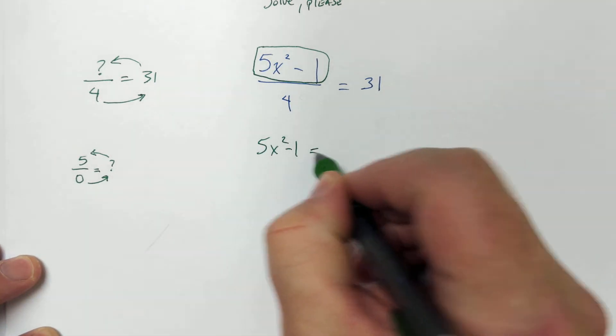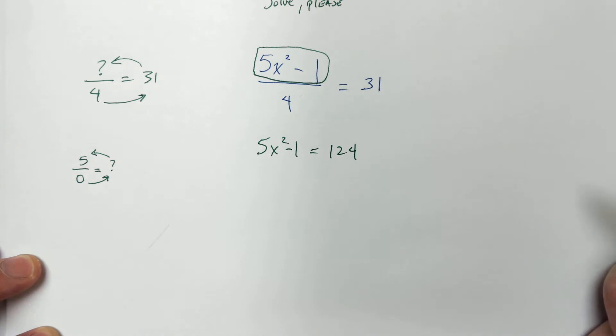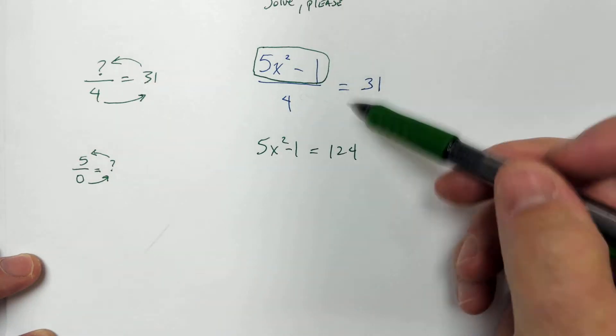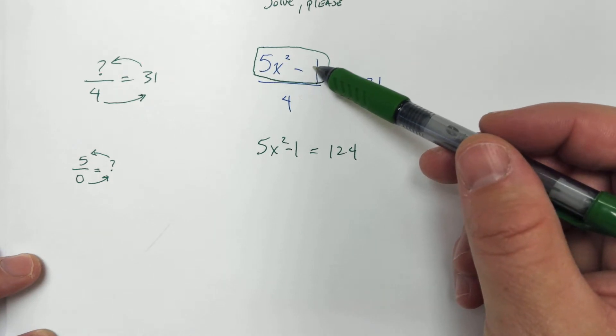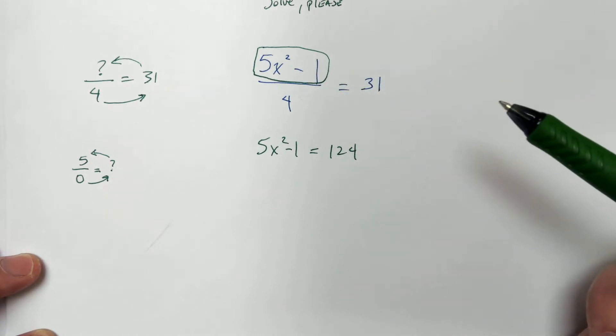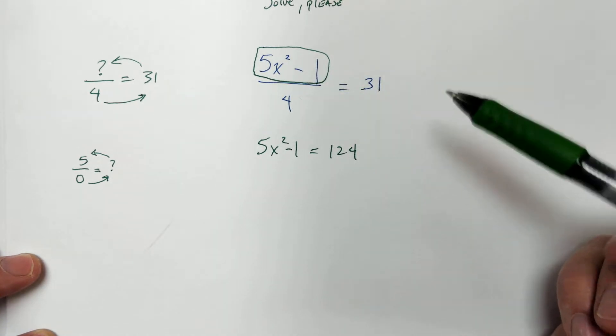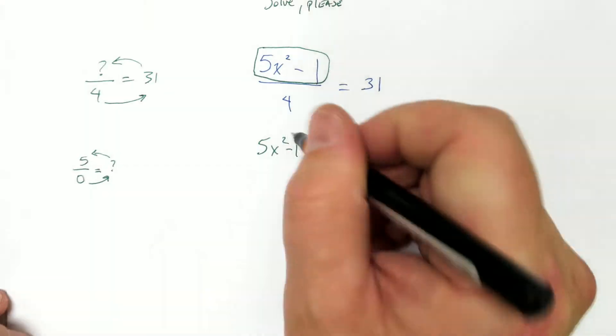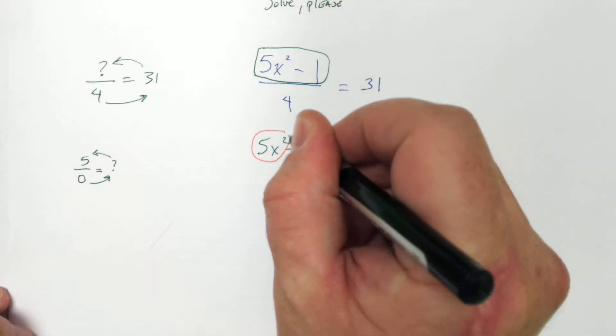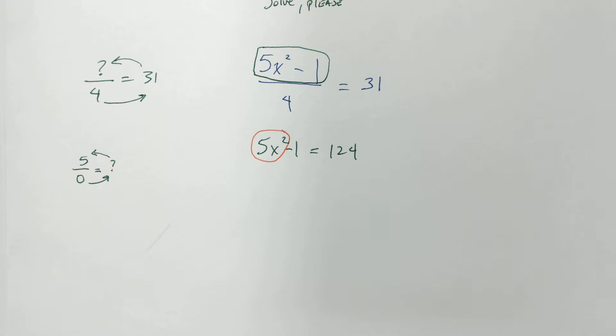So, it equals 124. Right? Make sense? This number has to equal 124 because 124 divided by 5 is 31. Yeah. Okay. Now the part we don't know is 5 times x squared. That's what we don't know. Right?